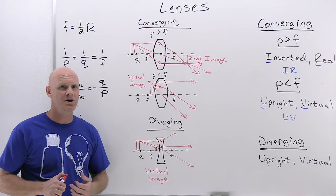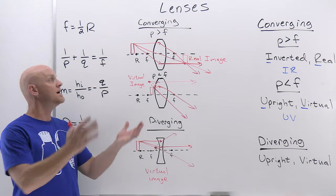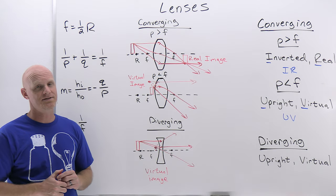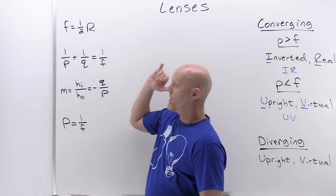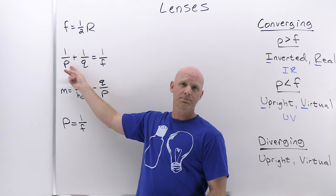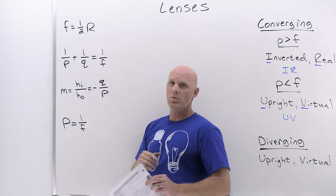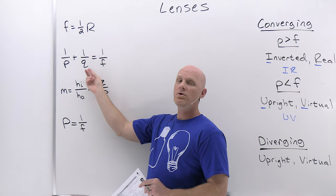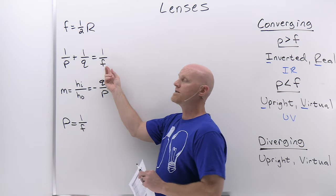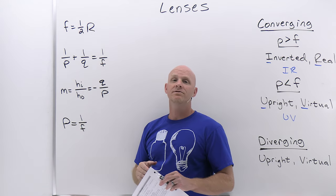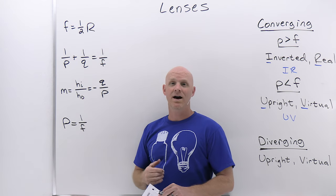Before plug-and-chug examples, a reminder of sign conventions. For any single lens, P is positive. Q is positive for a real image and negative for a virtual image. The focal distance F is positive for a converging lens and negative for a diverging lens, just as with a convex mirror.